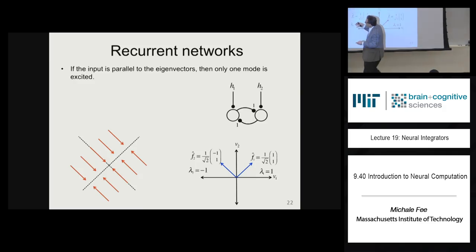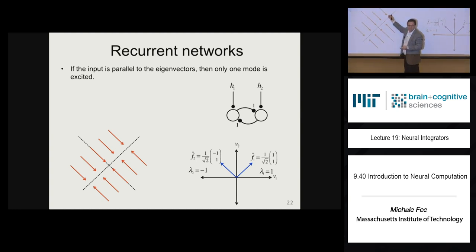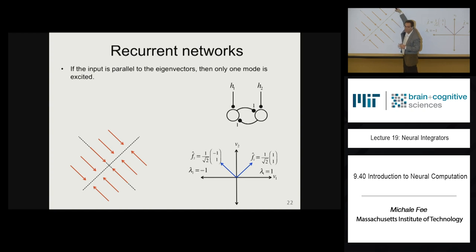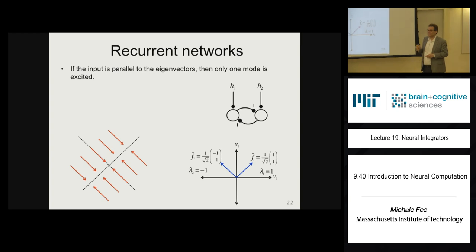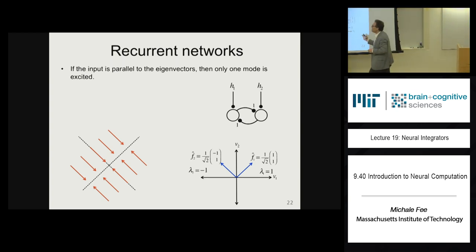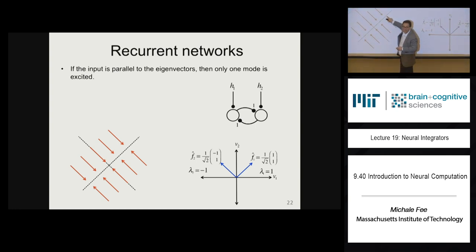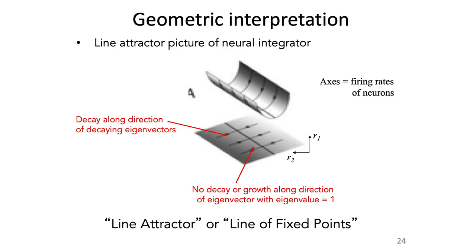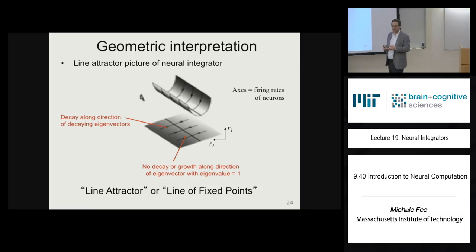No matter where you start this network with no input, it relaxes to the diagonal line — a state along that line attractor. The state of the network is attracted to that line. Once the state is on that line, it stays there. This is called a line attractor, which distinguishes it from point attractors where the state converges to a single point in state space.